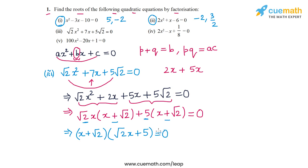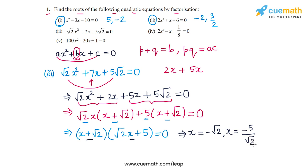We have factorized the quadratic into two linear factors: (x + √2)(√2x + 5) = 0. The roots are x = -√2 and x = -5/√2. Let's write them here: -√2 and -5/√2. That solves part 3.